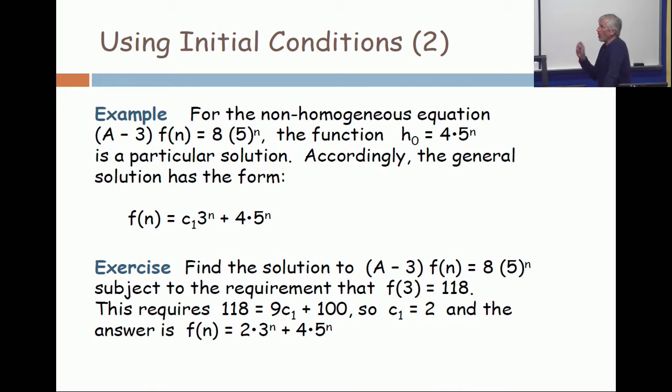Now, what is the homogeneous case? (A - 3) times f(n) is 0. And we learned, we studied this and proved this exactly, that if you take a single factor, (A - R) times f(n), where R is not 0, then the solution is a one-dimensional vector space whose basis is R to the n.